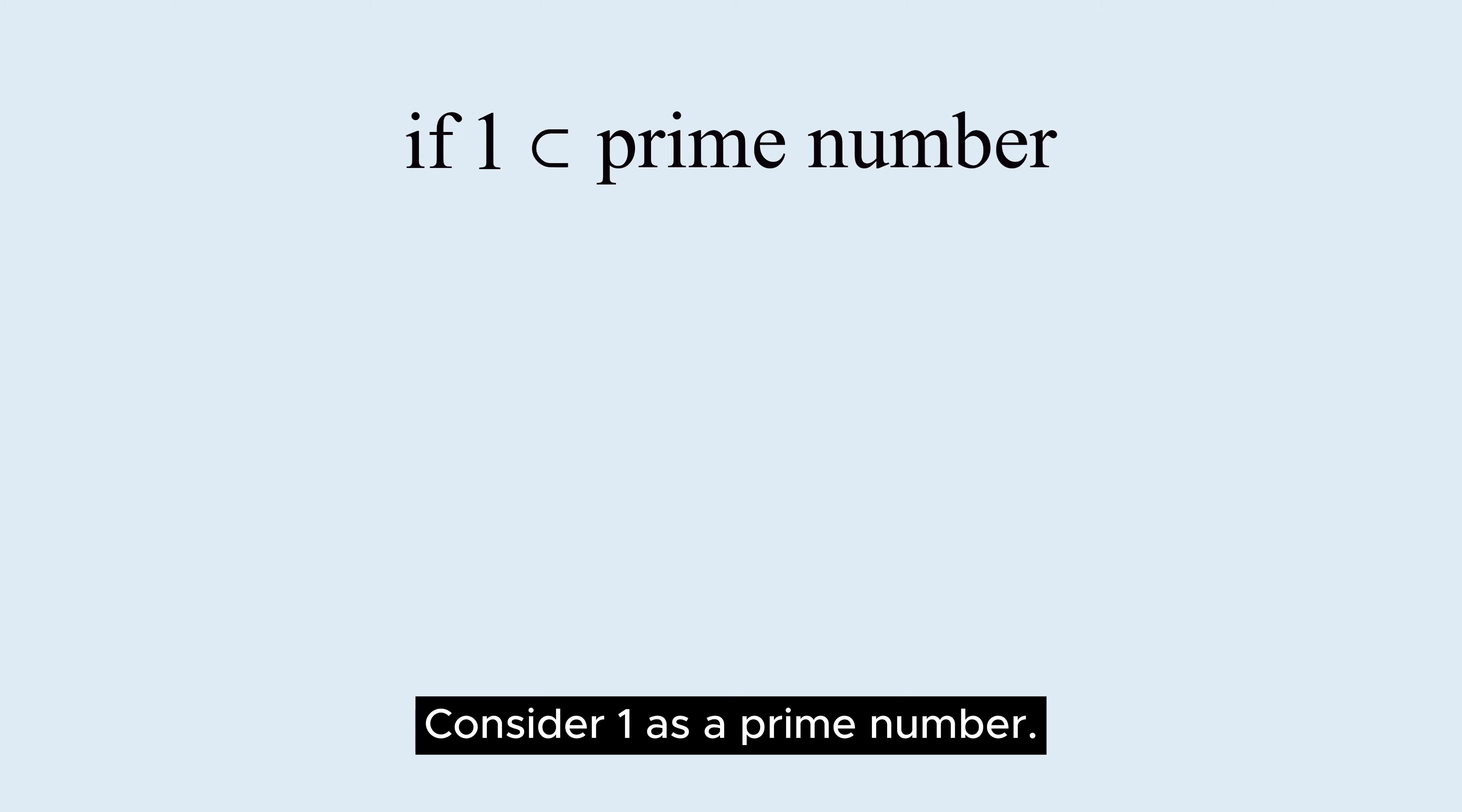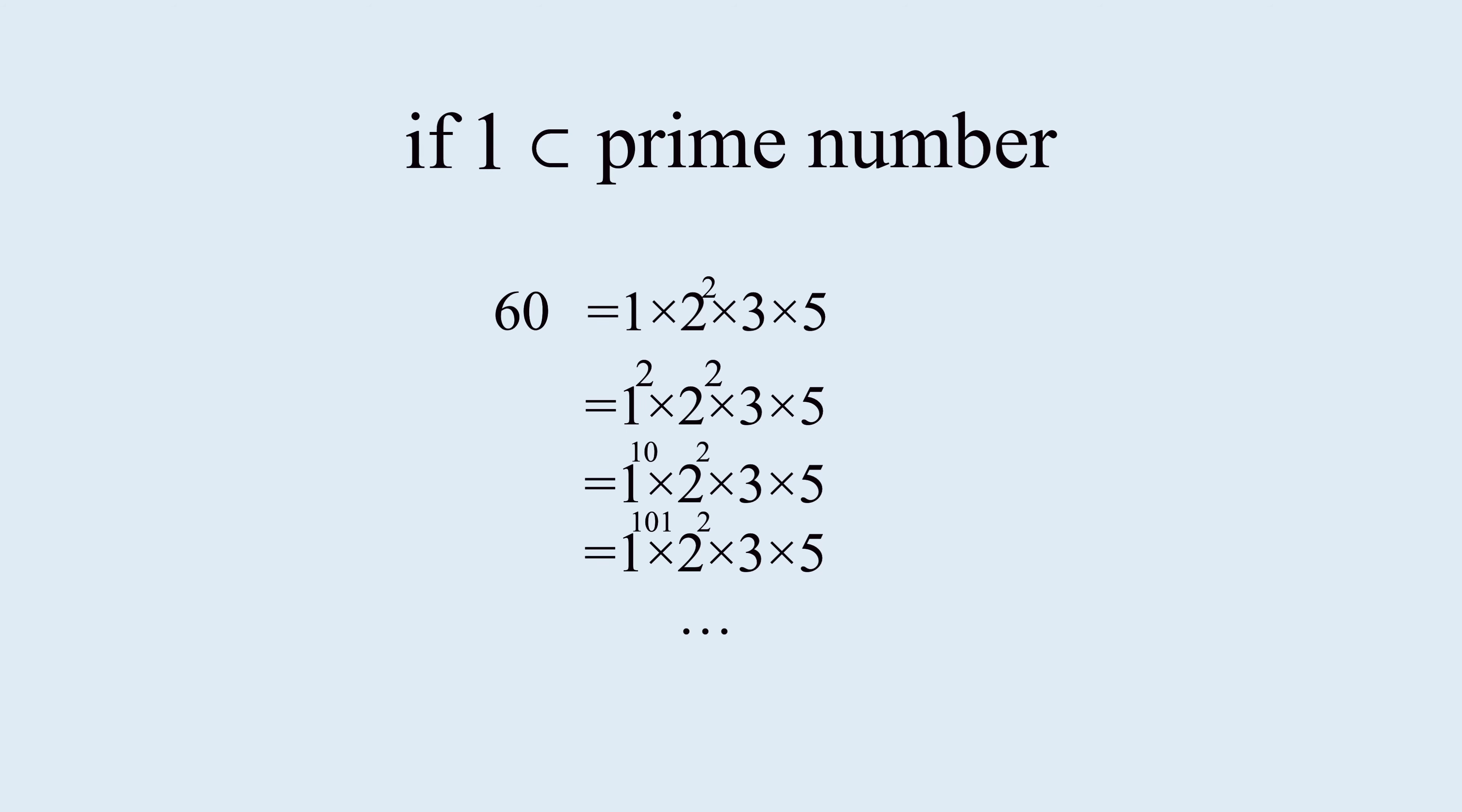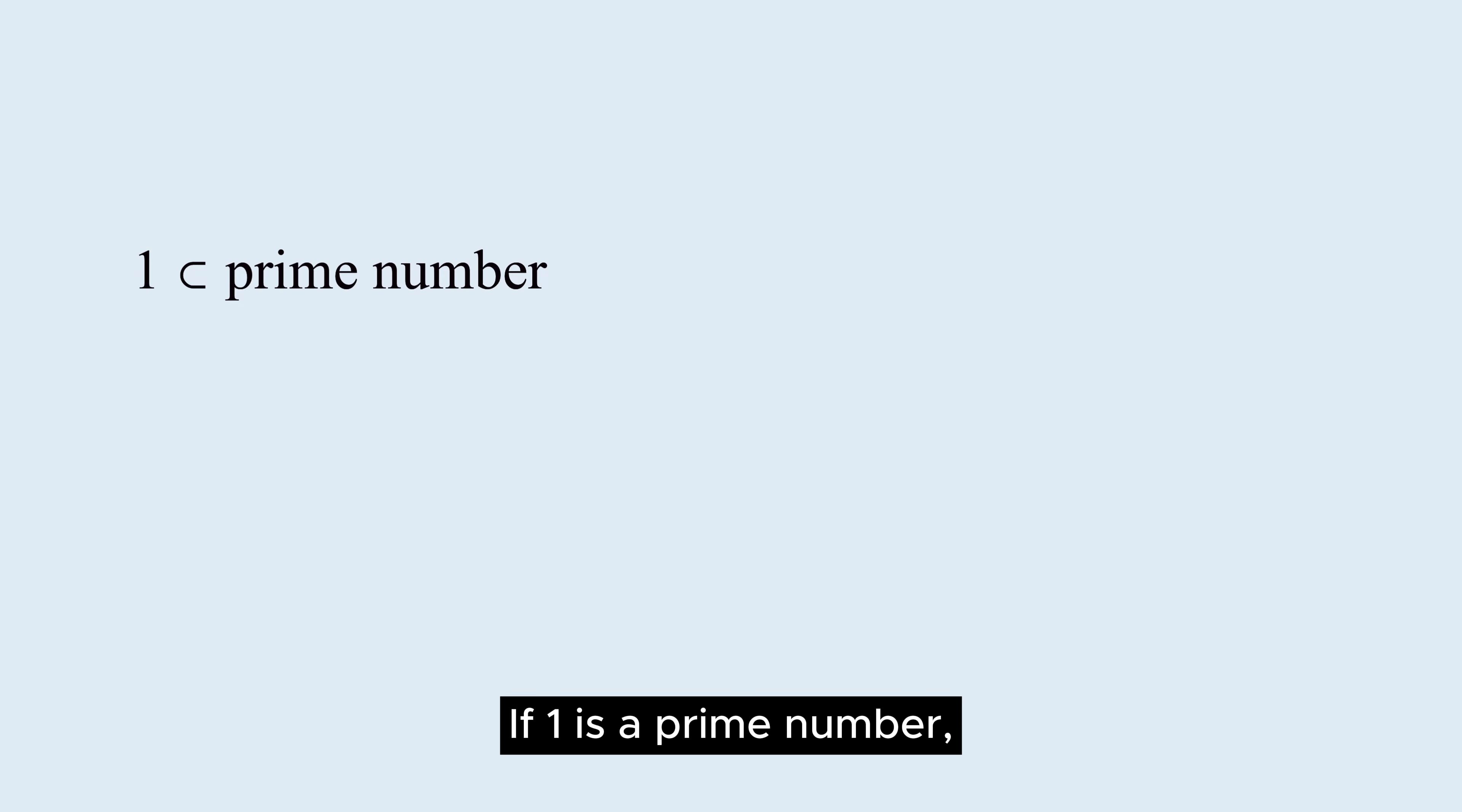Consider 1 as a prime number. Then, 60 can be expressed as a product of various forms of primes. This is because the value does not change no matter how many times you multiply it by 1.